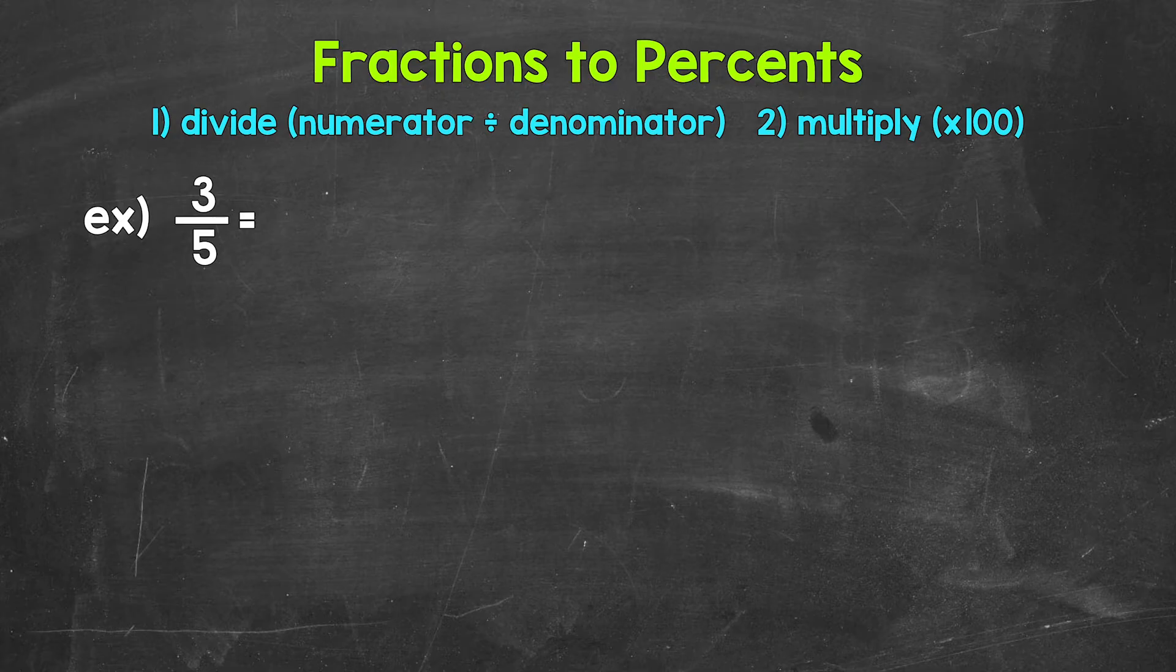Now when we convert a fraction to a percent, we can start by dividing the numerator, the top number of the fraction, by the denominator, the bottom number of the fraction.